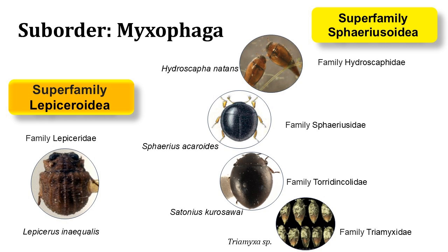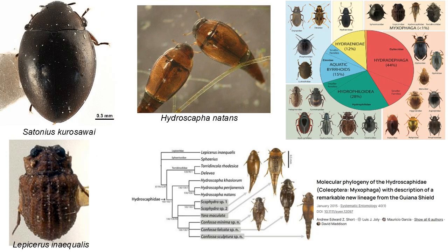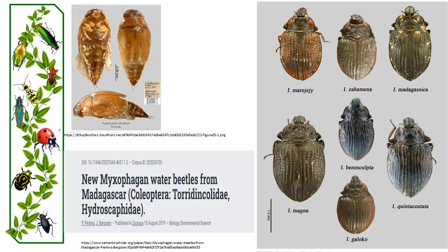Suborder Myxophaga has two families and includes a small number of species. These beetles are adapted to live in aquatic or semi-aquatic environments such as rivers, streams and even marshes. They are known for their elongated cylindrical bodies and their ability to crawl on submerged surfaces and organic matter. They feed on algae and other microorganisms found there.